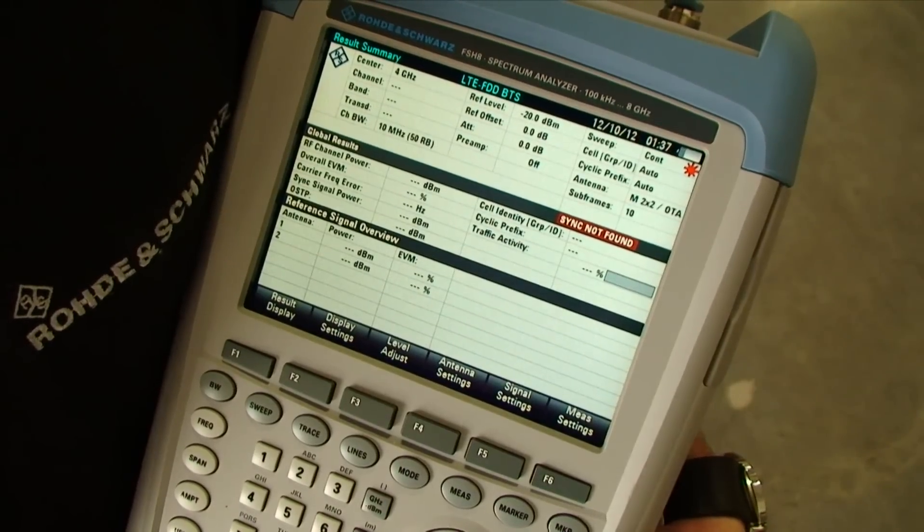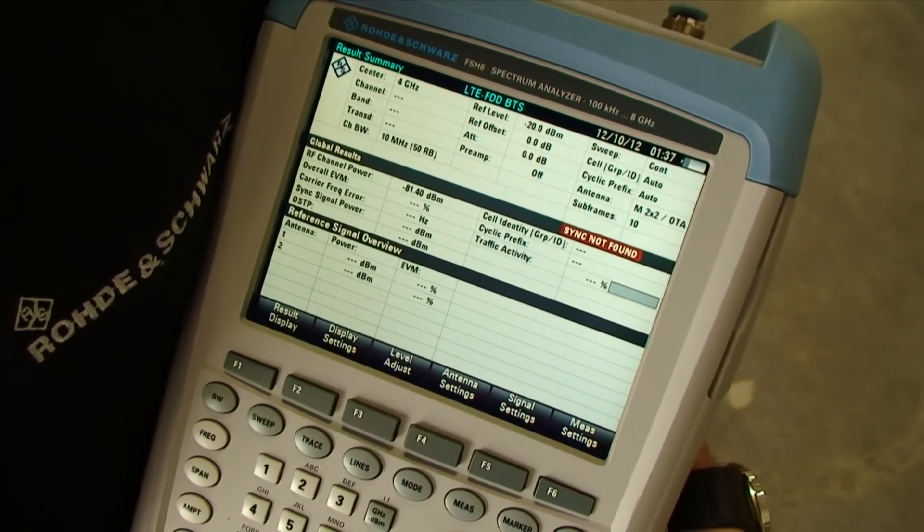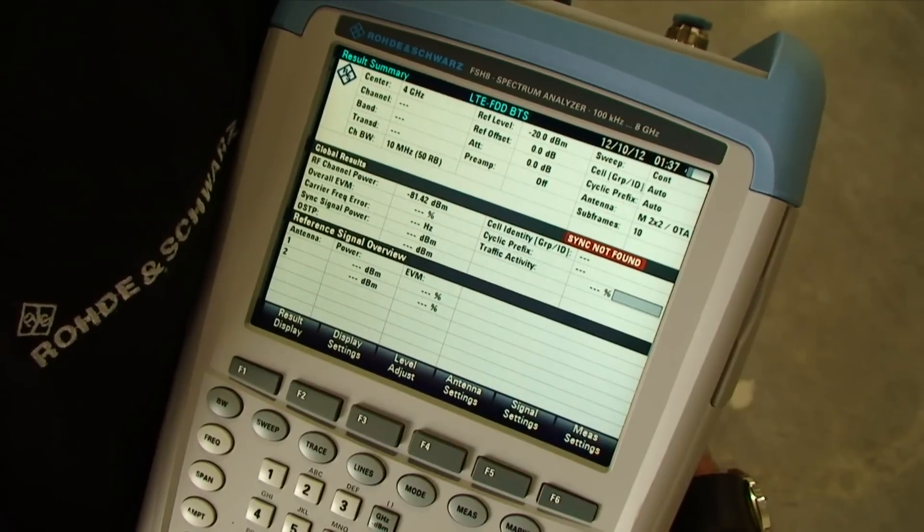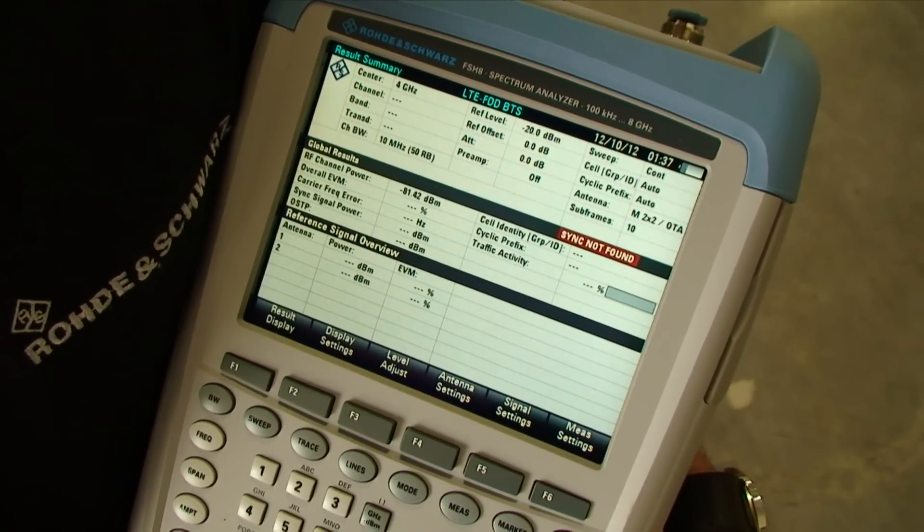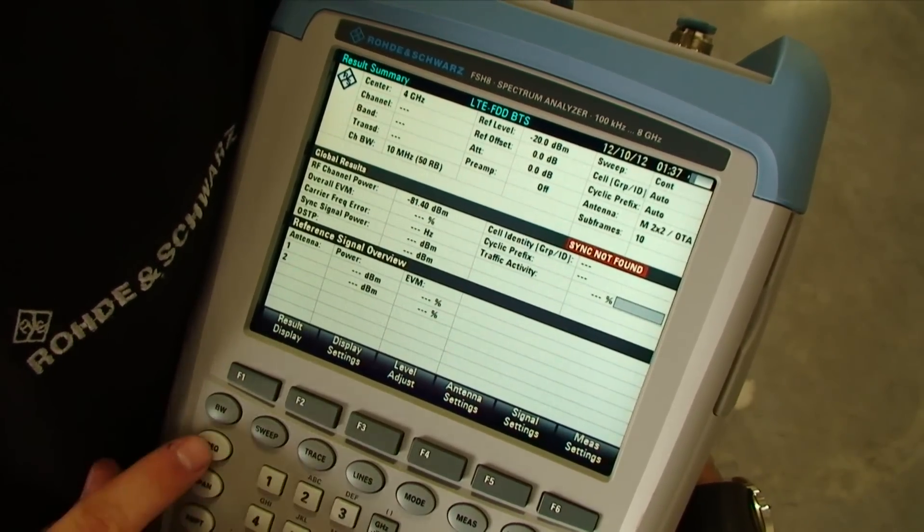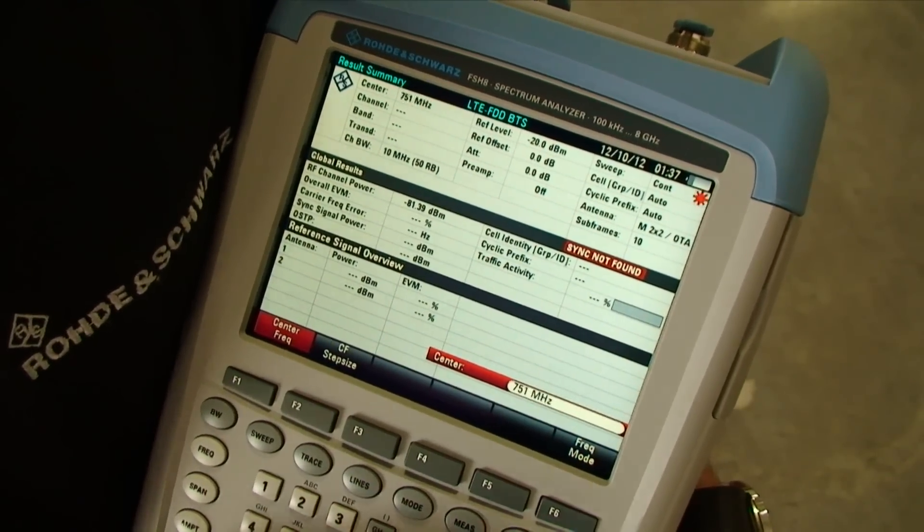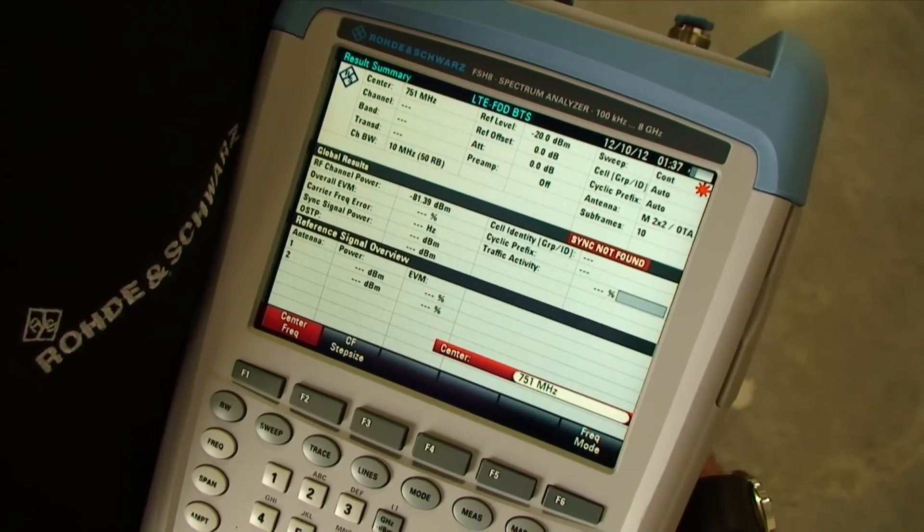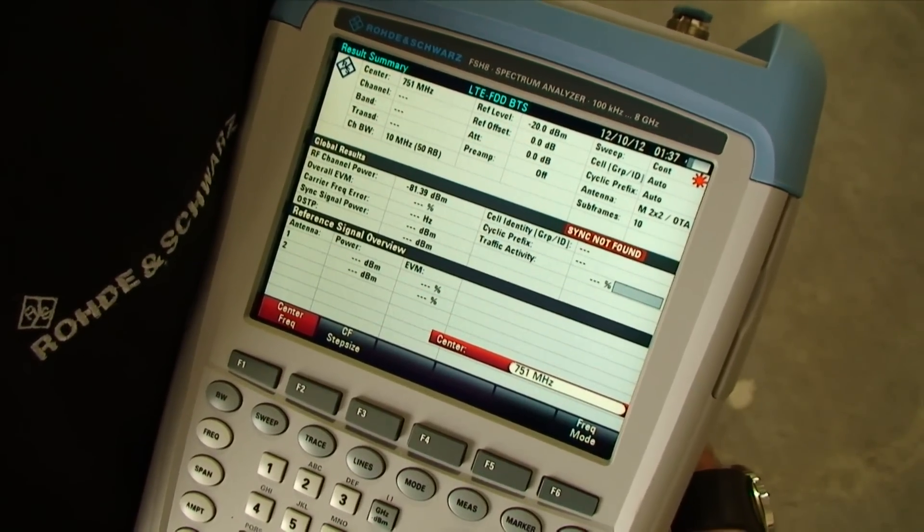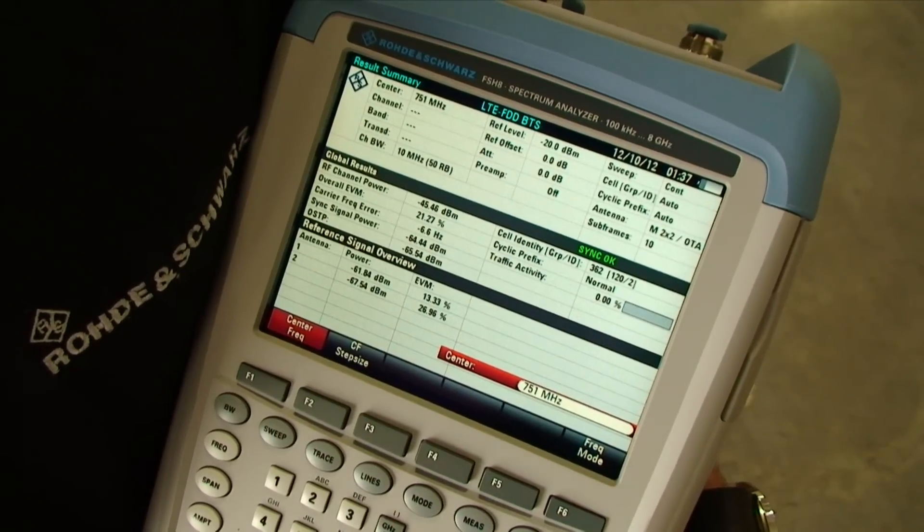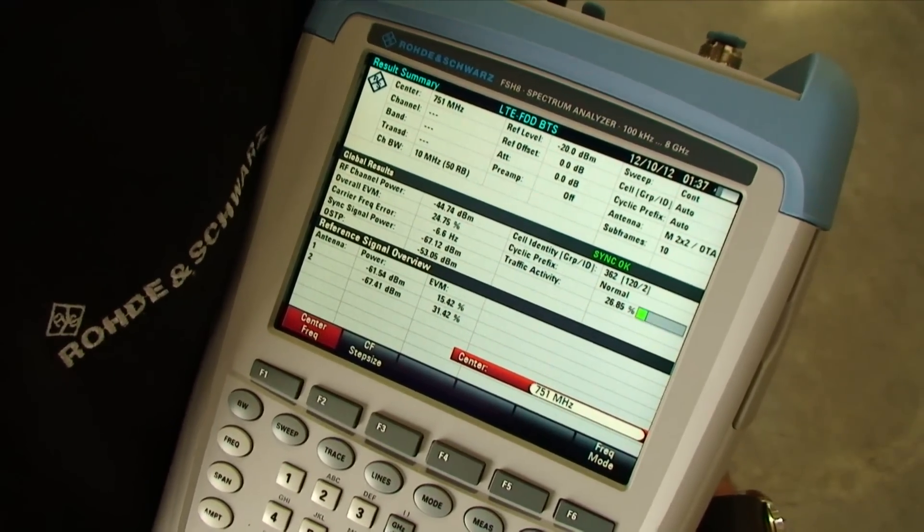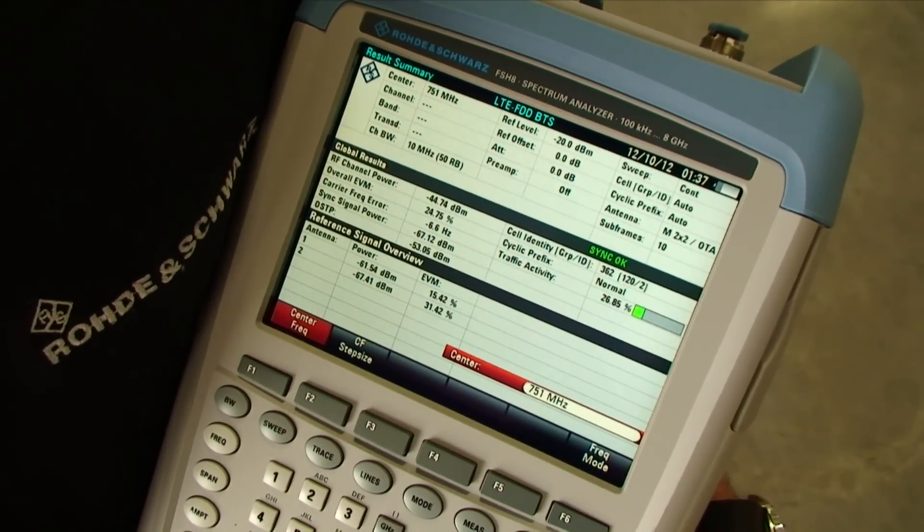And I've landed in one of our result displays called the result summary screen. Up at the top of the screen, you'll find our global settings of the FSH. In the top left, you see the center frequency is set to 4 GHz. I'm going to go ahead and change that to 751 MHz because I know that's an LTE signal we can sync on. It's 10 MHz wide. As you can see, the FSH was able to sync on the base station.